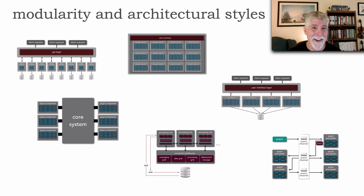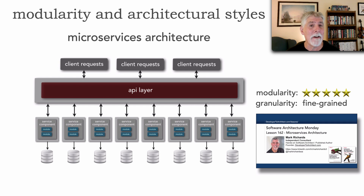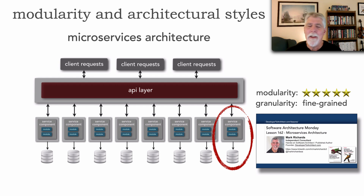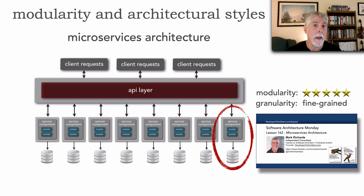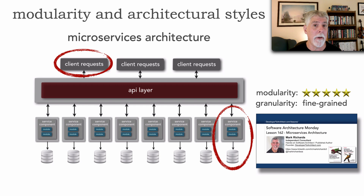There is one architecture style that outshines all others in terms of its support for modularity, and that is microservices. Microservices architecture gets its modularity from the single-purpose, separately-deployed nature of a service combined with the concept of a bounded context. I gave microservices a five-star rating because of the fine-grained nature of this level of modularity — we can have modules at a function level. I also gave it five stars because microservices typically carries with it micro front-ends, so we have modularity not only at the service level but also at the user interface level.